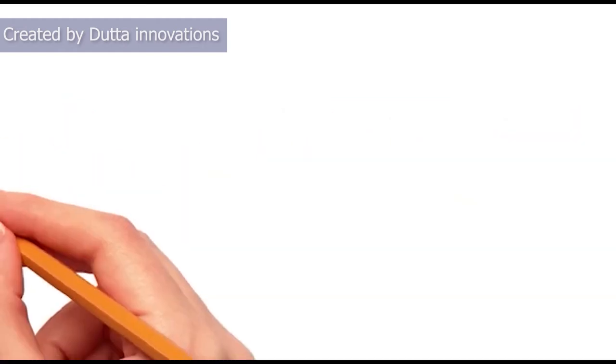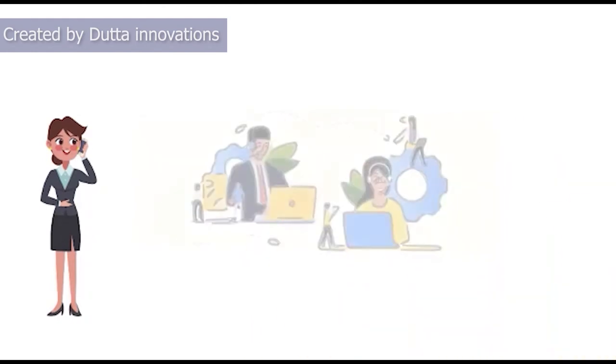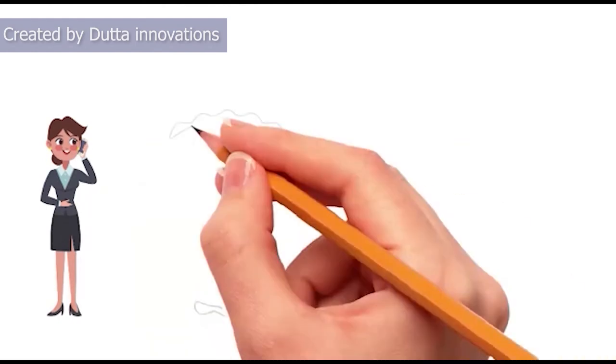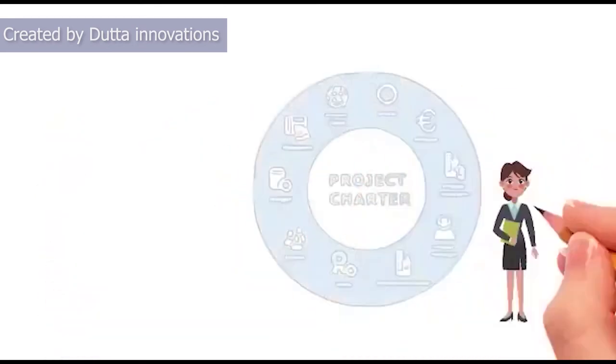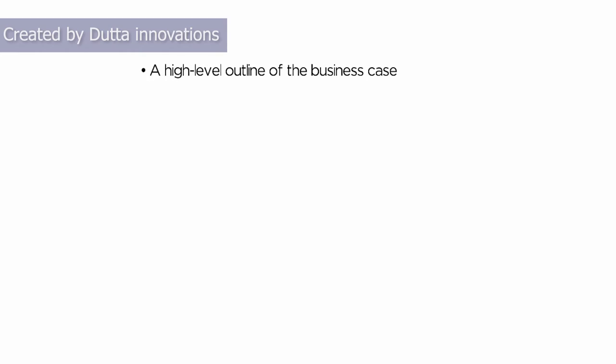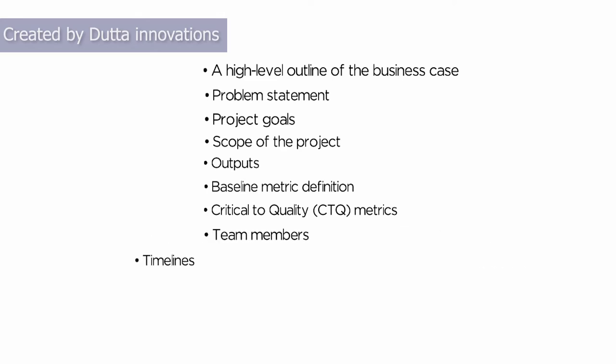Sophia collected voice of customers and defined the problem. To capture the voice of the customer, Sophia analyzed all the quality defects received in the last two years. She created a project charter. A project charter includes a high-level outline of the business case, problem statement, project goals, scope of the project, outputs, baseline metric definition, critical to quality CTQ metrics, team members, and timelines.